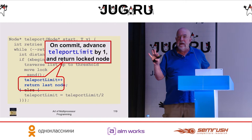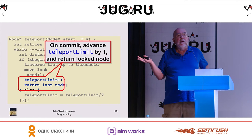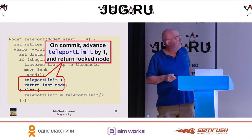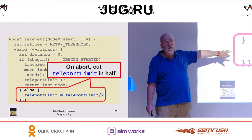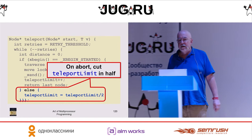This is a very adaptive strategy. In the worst case, if you don't teleport at all, you're no worse off than before. This is an example of how you can use hardware transactions to accelerate things you were doing before. Hardware transactions work well as a kind of fast path, but you still need to be able to deal with the fact that hardware transactions can fail for any reason, so you need a backup plan. If you abort, you cut the teleport limit in half.